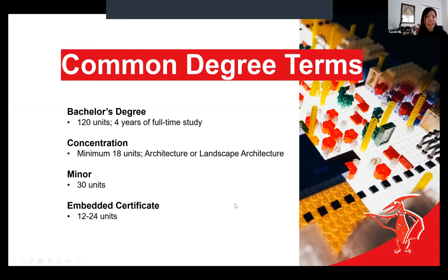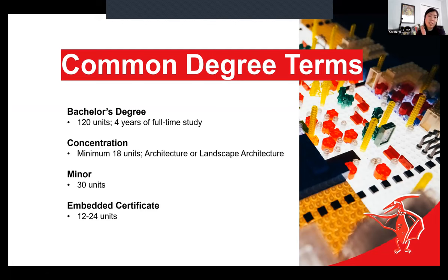For sure. So we'll look at the bachelor's degree first — that is the typical base credential program that you go into when you enter U of C pursuing undergraduate level studies. Similar to the BDCI, bachelor's degrees are typically 120 units, and that usually takes around four years of full-time study. At U of C, we use units to describe the courses — most courses are typically three units. In a general semester, a max full-time course load is five courses or 15 units. When we look at the concentration, that's a focus within a degree or a major, which requires usually a minimum of 18 units.